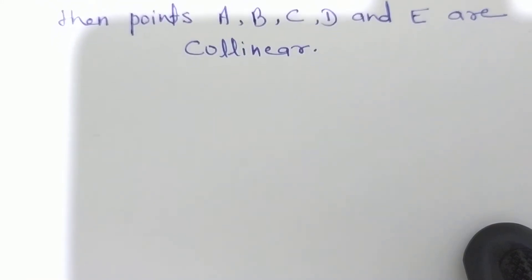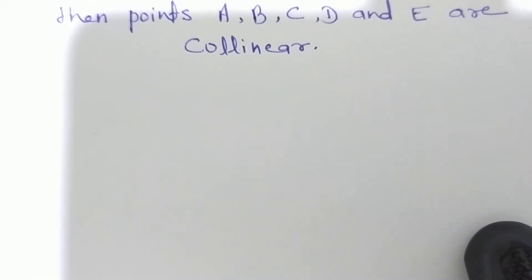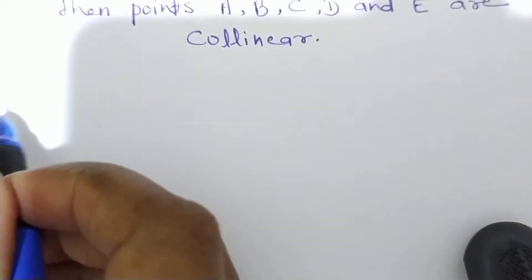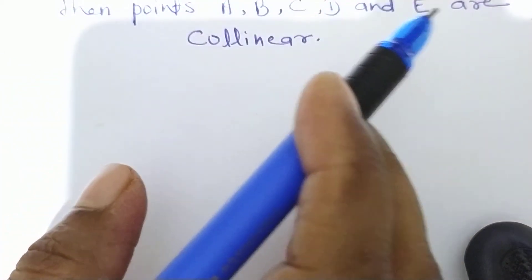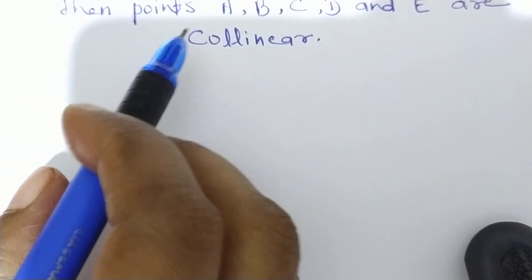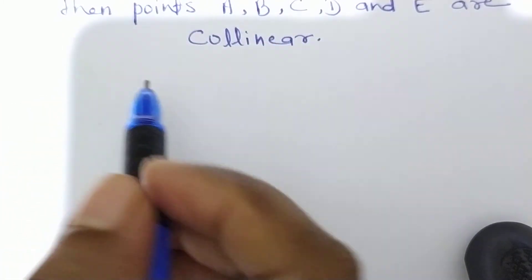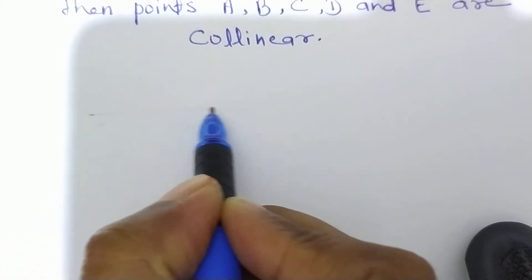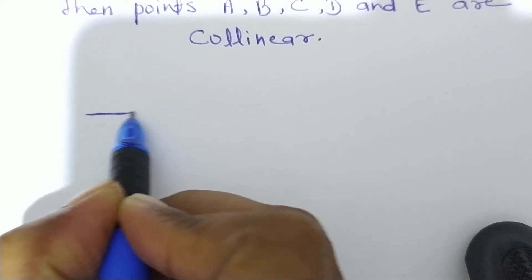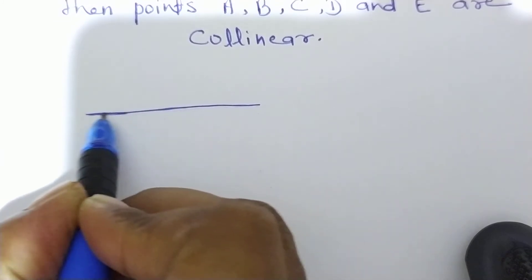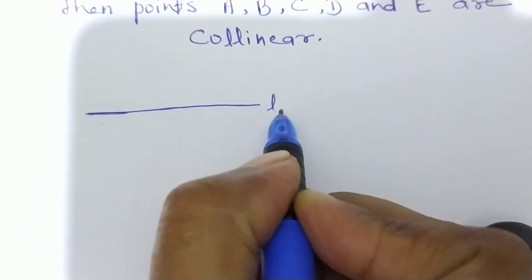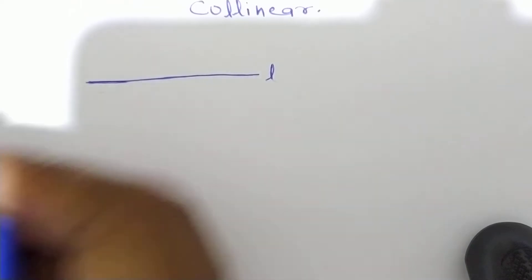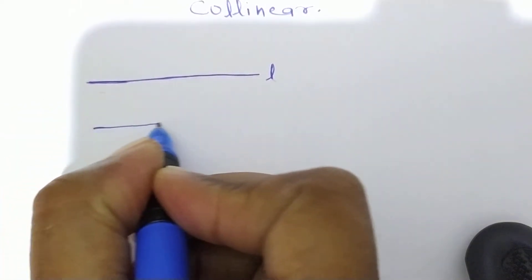Toh chaliye ise proof karte hain. Let's prove Theorem 5. According to this theorem, given that lines AB, AC, AD and AE are parallel to a line L. Toh hamne ek line draw kiya L. L ek line hai jiske parallel mein AB lines hain.